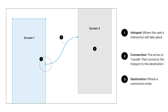To create a connection, first select the item you want to be the hotspot. This is where the user's interaction will take place. You can create a hotspot on anything, like a button, icon, or heading. Second, make the connection — this is the arrow, or noodle, that connects the hotspot to the destination. You can make a connection by clicking the little blue plus sign inside the circle. Finally, indicate the destination — this is where a connection ends. Remember, the destination has to be a frame or screen. It cannot be an item within the frame.